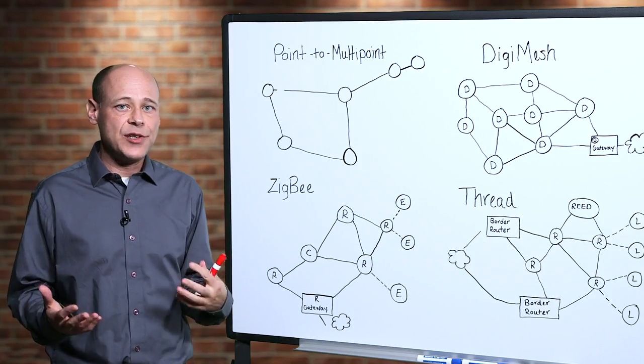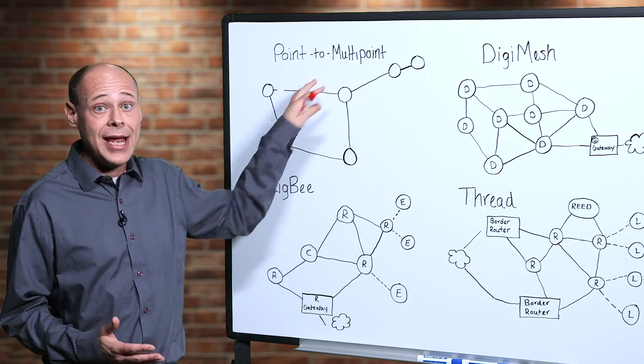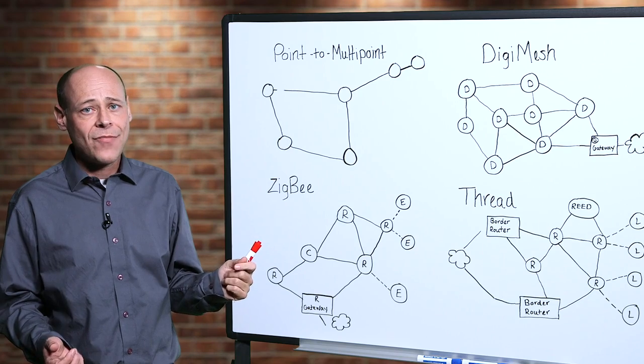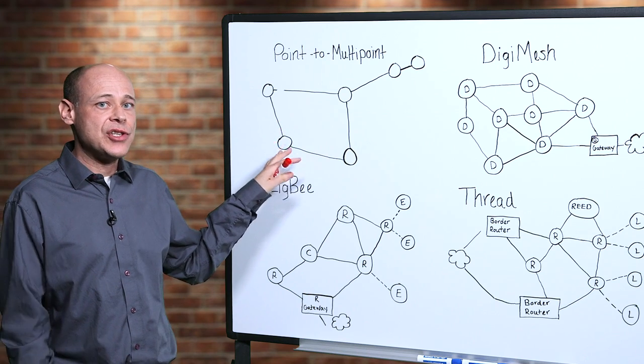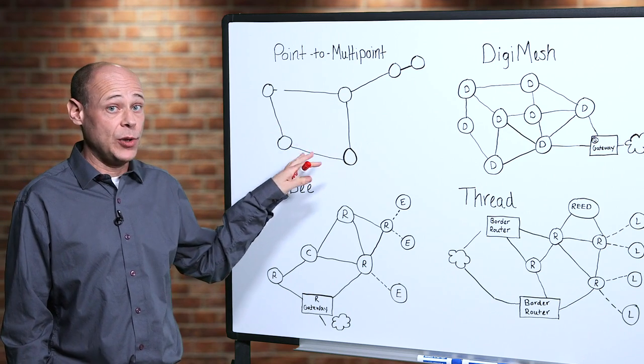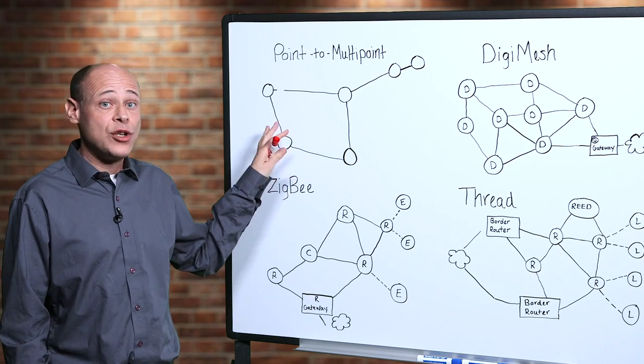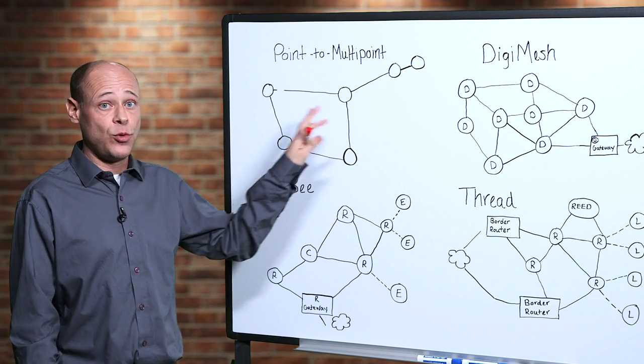Here's a quick summary of the difference between point-to-multipoint and mesh networking. In a point-to-multipoint network, communications are generally faster and simpler. However, you're limited to the reach of individual radios.